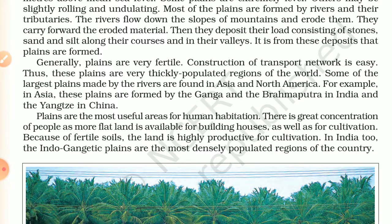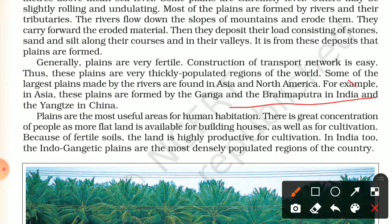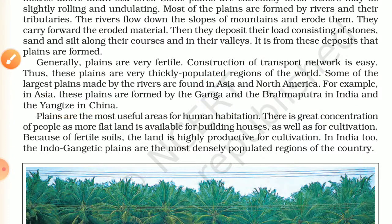Some of the largest plains made by rivers are found in Asia and North America. In Asia, plains are formed by the Ganga and Brahmaputra rivers in India. The Ganga and Brahmaputra form a very fertile delta — the Sundarbans delta in West Bengal. Plains are the most useful areas for human habitation.